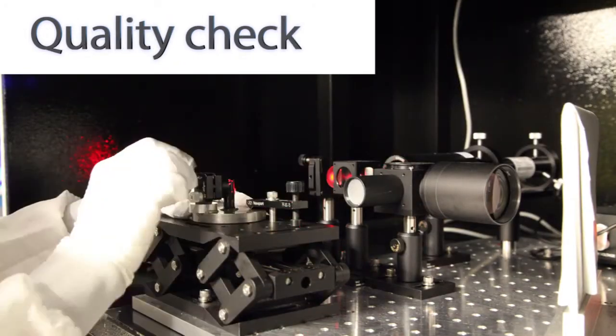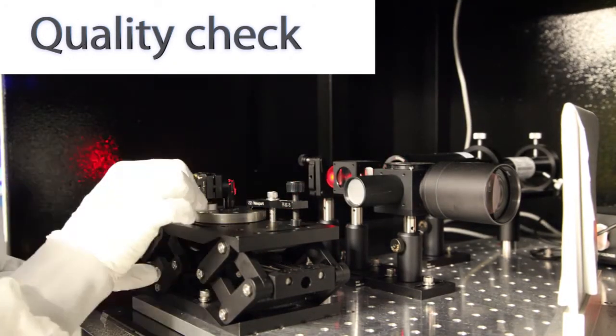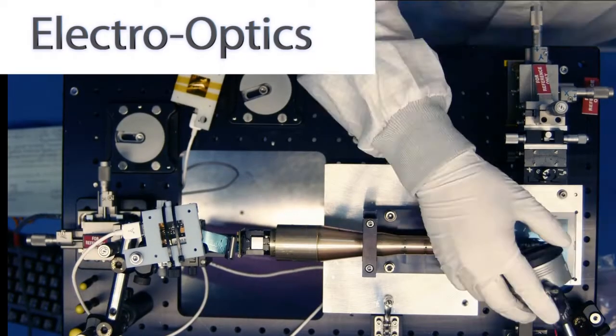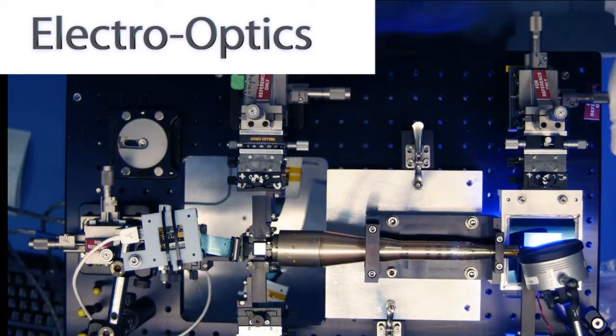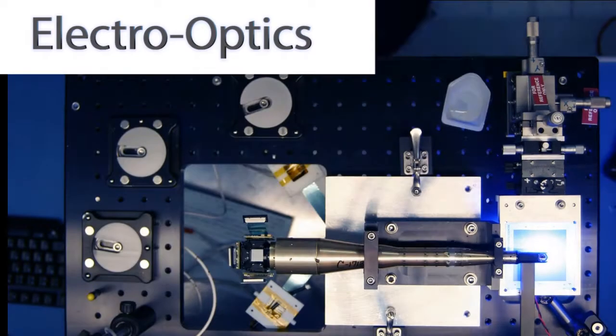To measure the alignment of the objective components, we build a custom interferometer with pass-fail criteria. Electro-optical assembly combines the optical tube with the image sensors and the illumination source.